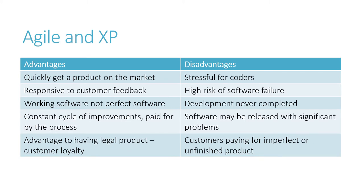So we looked at this set of advantages and disadvantages already at the end of the last lesson. Agile and XP methods are quick and they have the advantage of producing regular upgrades, but they are stressful and the product itself is always imperfect.